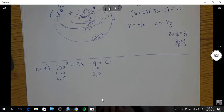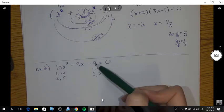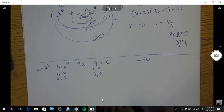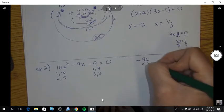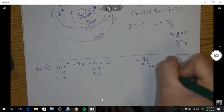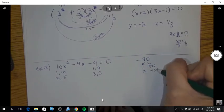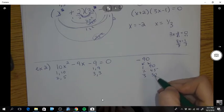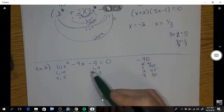Okay, so now we're going to take the front and the back number and multiply them. So that is negative 90. We're going to think about multiples of 90. So 1 times 90, 2, 45, 3, 30.